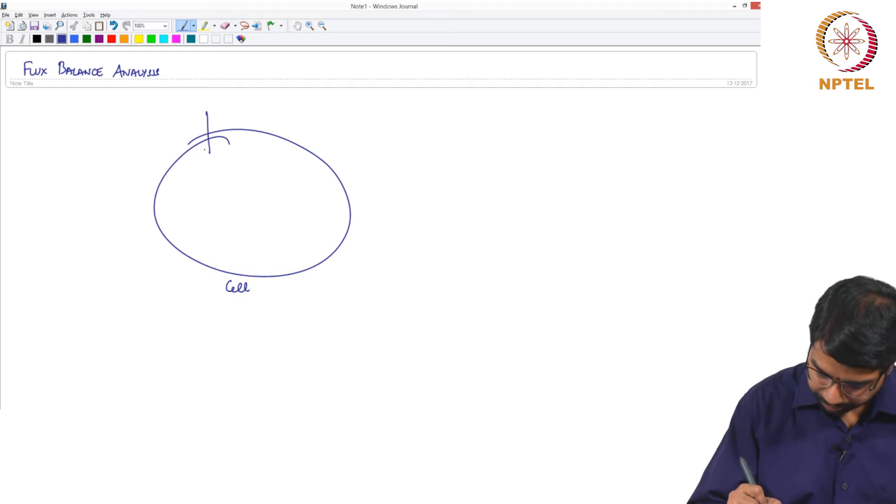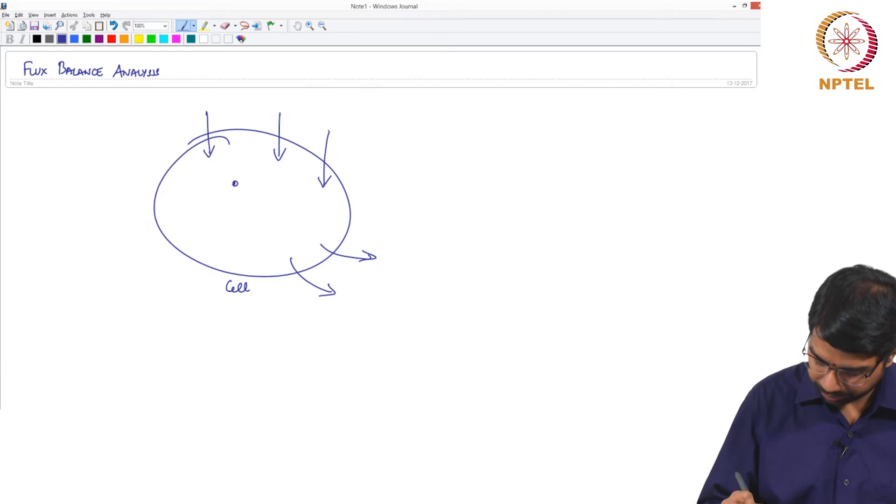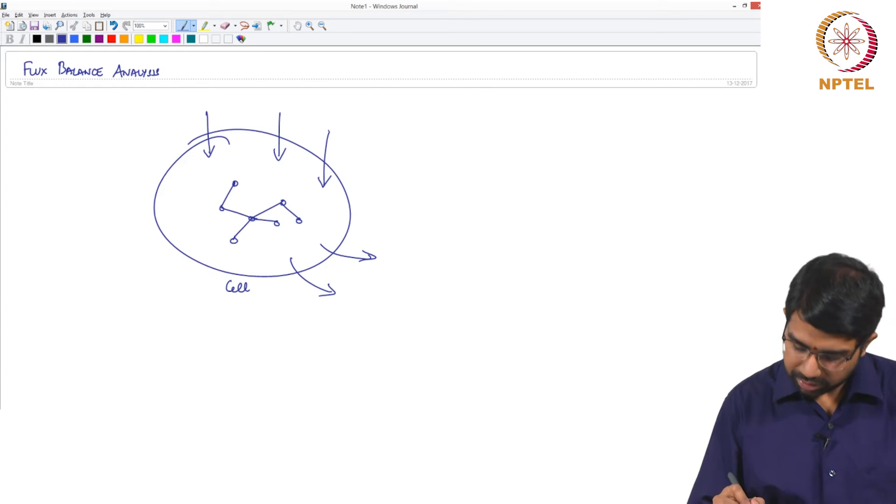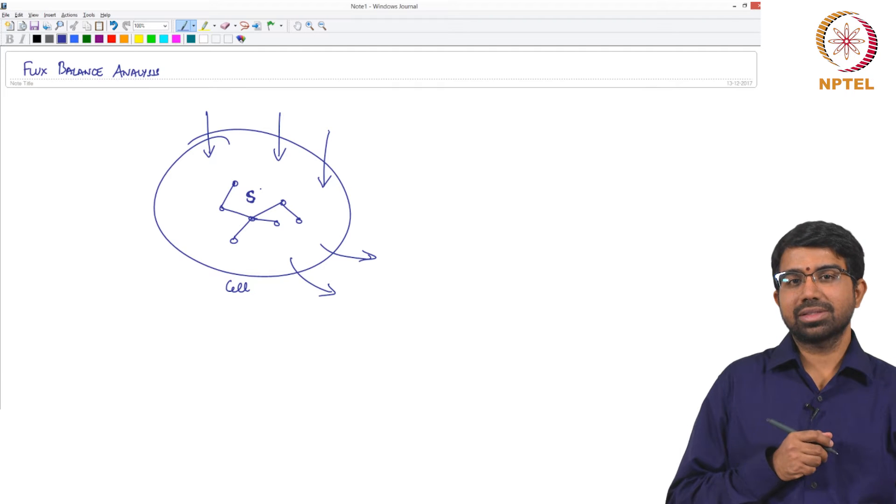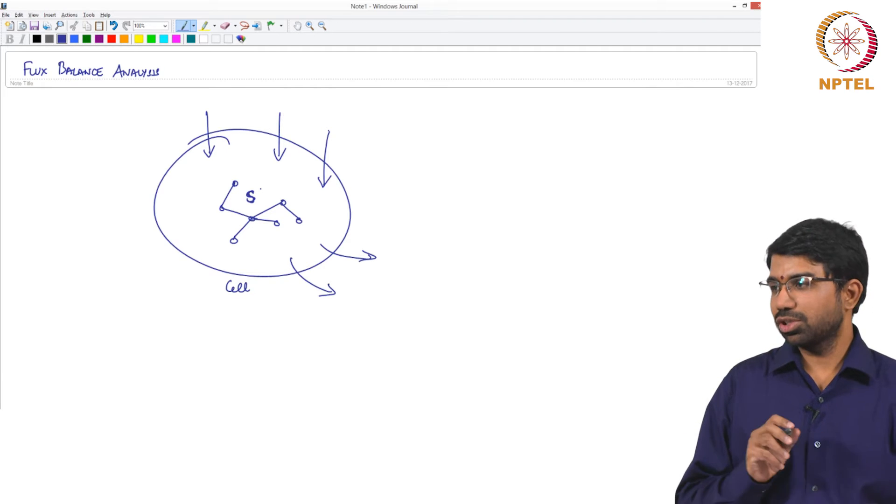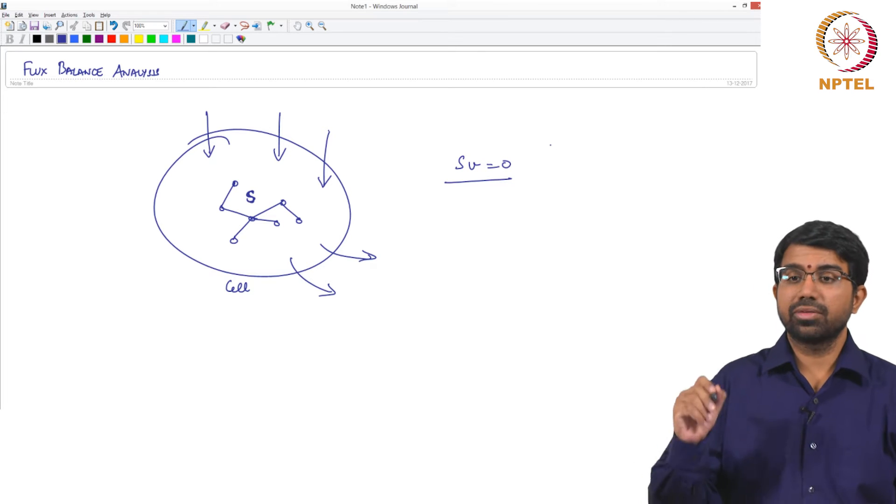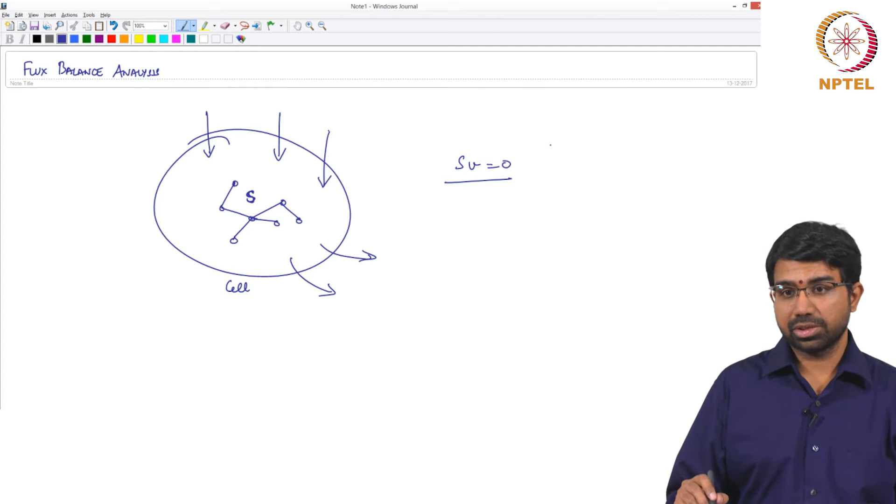You have a cell which takes in several metabolites, gives out some metabolites and there is a complex metabolic network inside of it. This is the metabolic network we essentially represent as S, your stoichiometric matrix. And what you do is Sv equals 0. This is not, you cannot violate this constraint. This is a fundamental constraint.